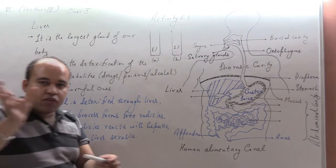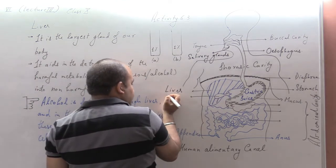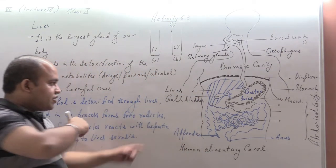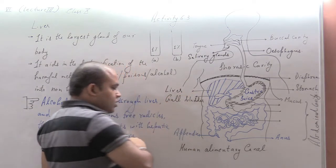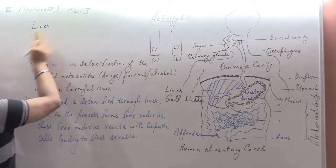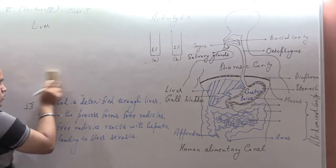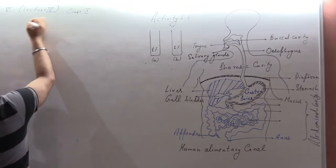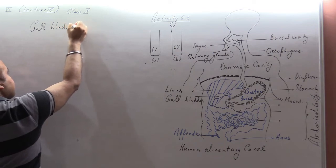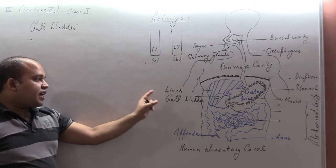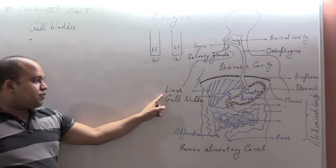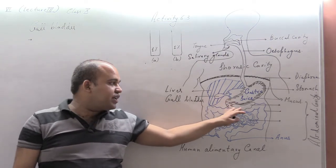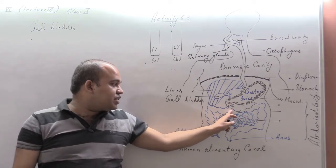There is another gland present along with the liver called the gallbladder. The gallbladder, in association with the liver, secretes bile juice, which has the ability to neutralize the stomach acids, transforming the pH of the food materials from acidic to alkaline. This alkaline environment is needed within the small intestine where the food material enters.